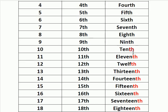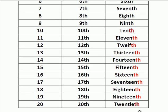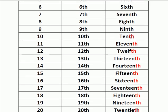The only differences are: ninth — n-i-n-t-h, there is no 'e'; twelfth — t-w-e-l-f-t-h, not t-w-e-l-v-e-t-h, it is 'f'; and twentieth — t-w-e-n-t-i-e-t-h. For all the rest, to write the ordinal number name, first write the number name of the given number, then add 'th' to the end, and you will get the ordinal number name for numbers from 4 to 20.